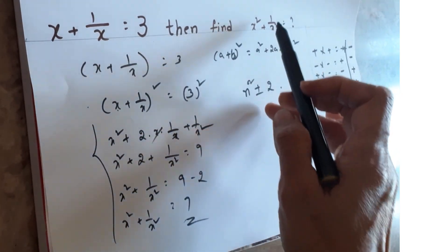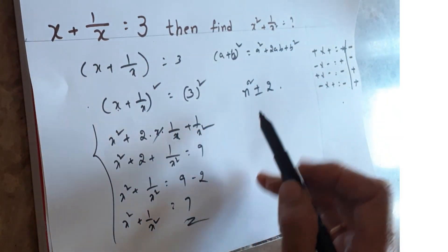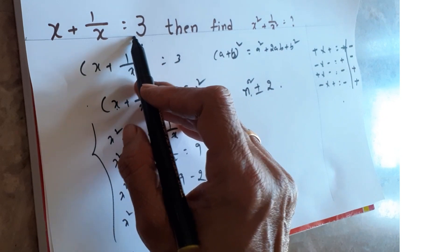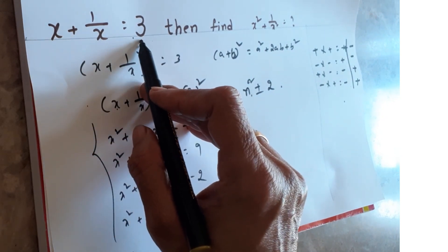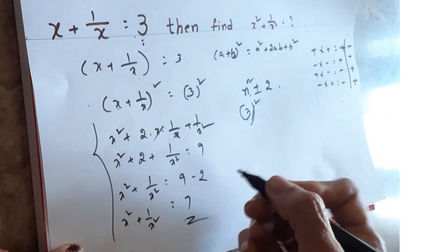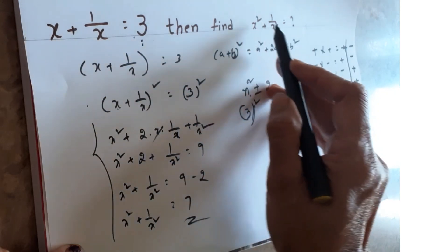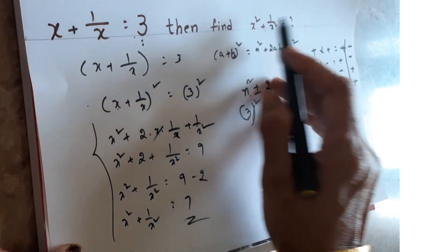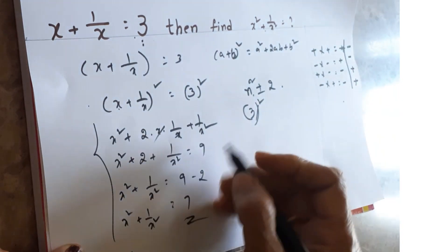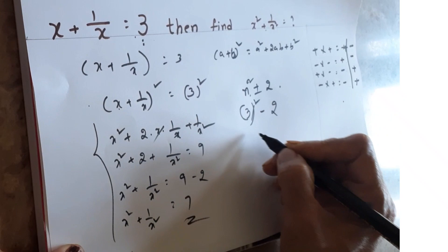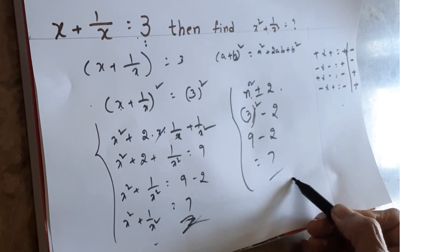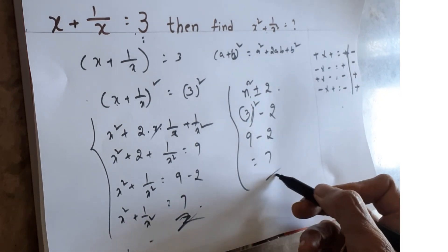For x + 1/x = 3, find x² + 1/x²: n is whatever number is given in the question, so n = 3. Apply the formula n² ± 2. The sign in the question is plus; using the ultra-minus rule, plus becomes minus, so it's n² − 2 = 3² − 2 = 9 − 2 = 7. Same answer!